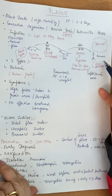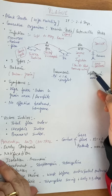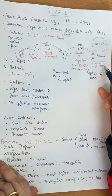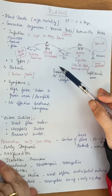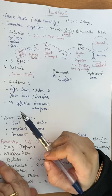Important host factors include reduced immunity in humans, which makes the disease more likely. People who go outdoors, usually men, are also at greater risk. In humans, plague occurs in three types: bubonic plague, pneumonic plague, and septicemic plague.